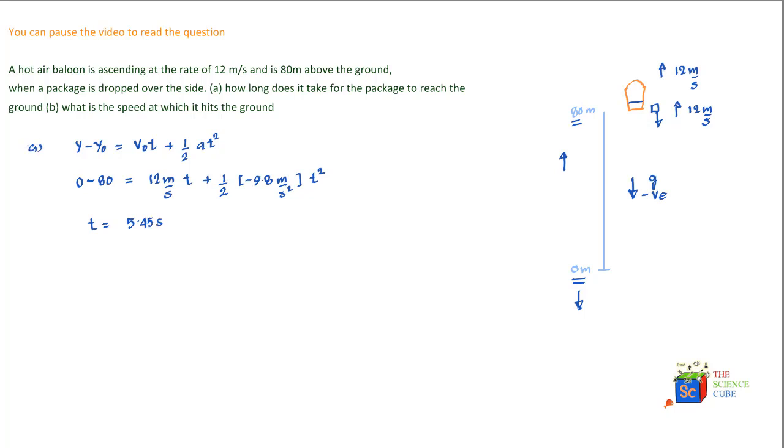Now this is part A of the problem. Part B of the problem is what is the speed at which it hits the ground. So we use equation: final velocity is equal to initial velocity plus at. Again, final velocity v is equal to its initial velocity which was 12 meters per second plus a, here is g with the negative sign because it's acting in the downward direction.